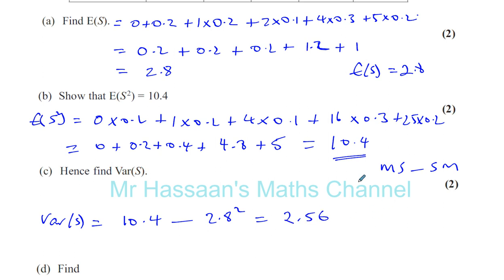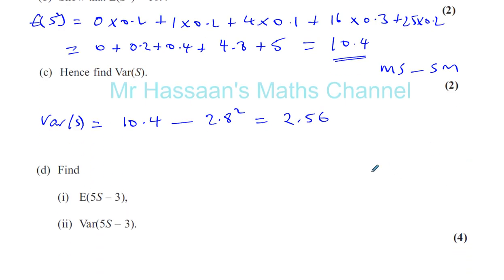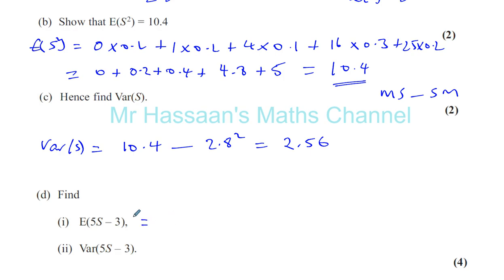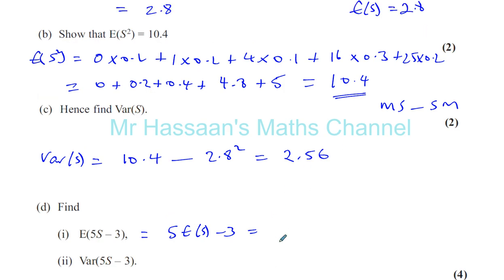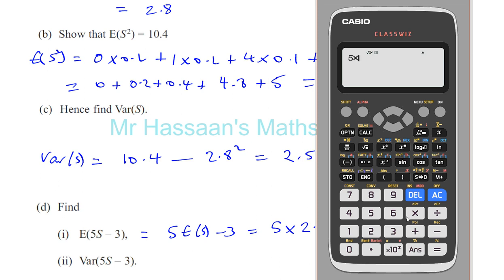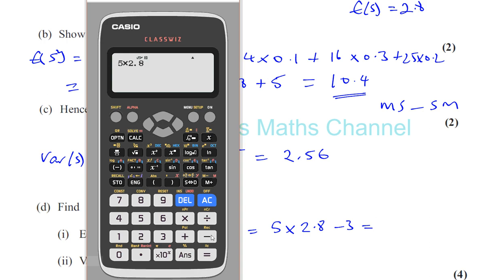So we found E(S), E(S²), and Var(S). Now it says find E(5S − 3). This is the same as doing 5 times E(S) minus 3 — it's like coding. The multiplication and subtraction both affect the mean. So you multiply the mean by 5 and take away 3: 5 times 2.8 minus 3, which gives 14 minus 3, so the answer is 11.